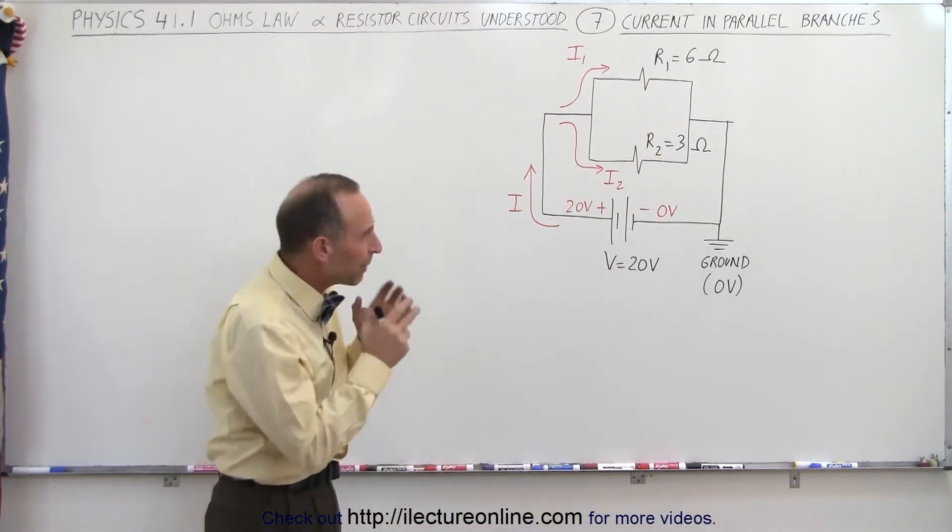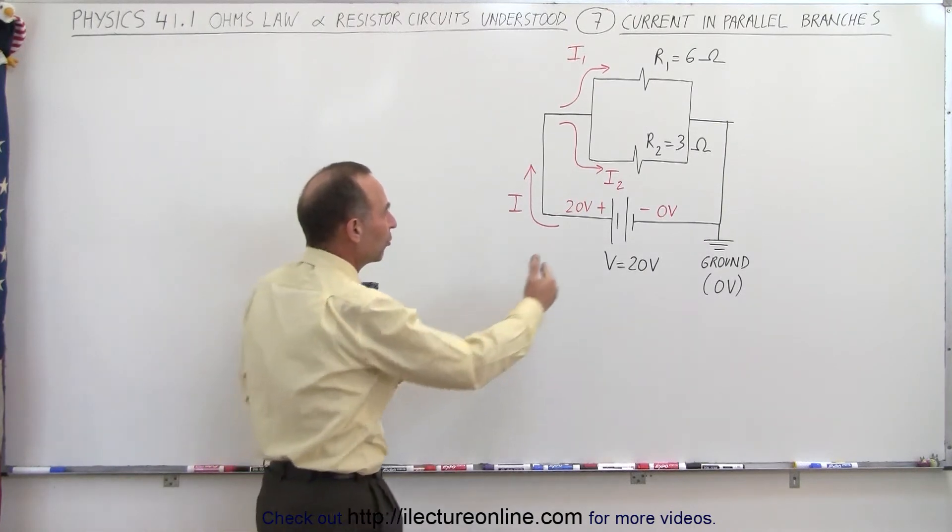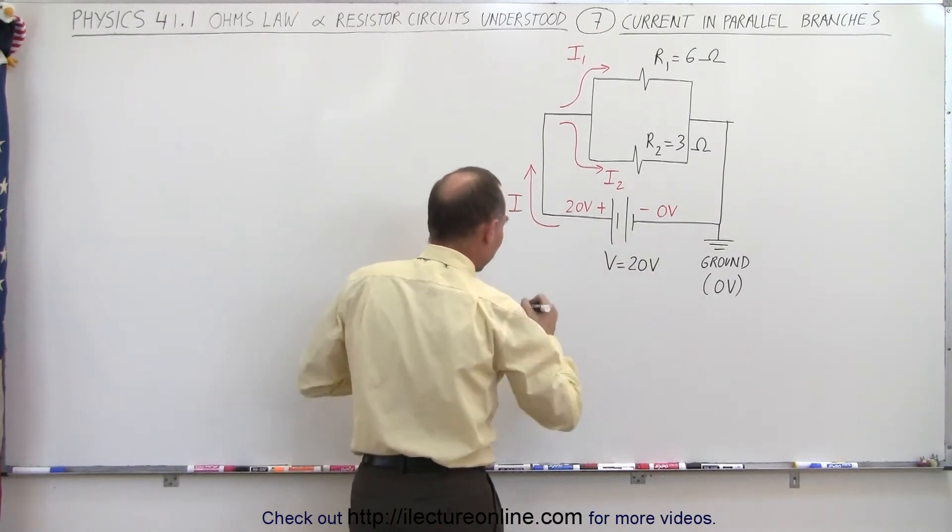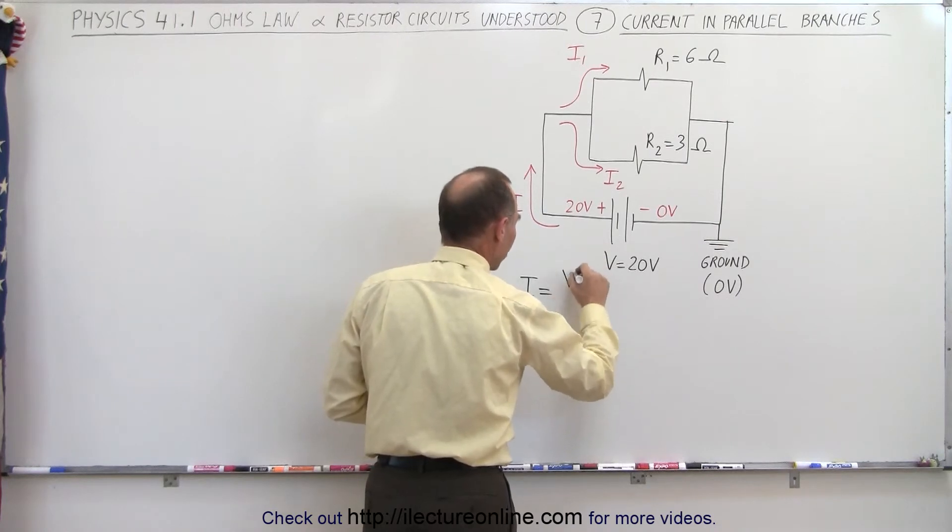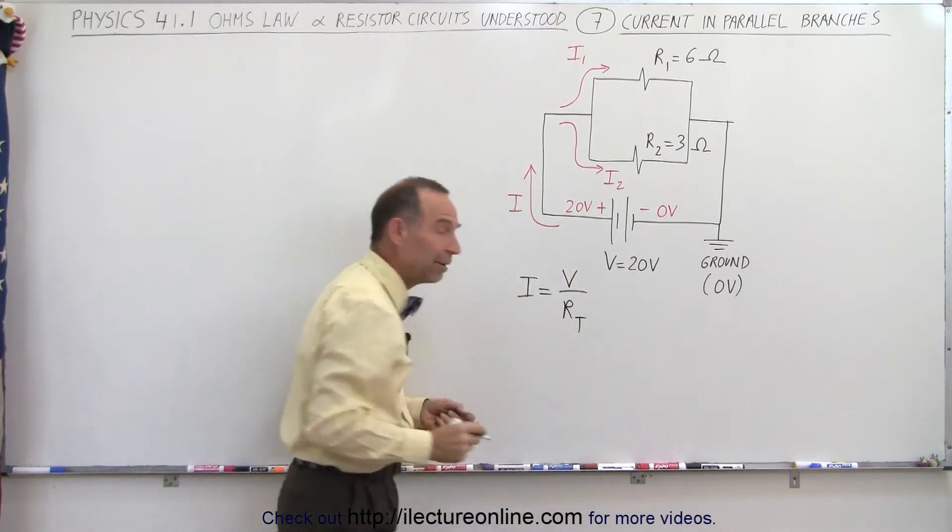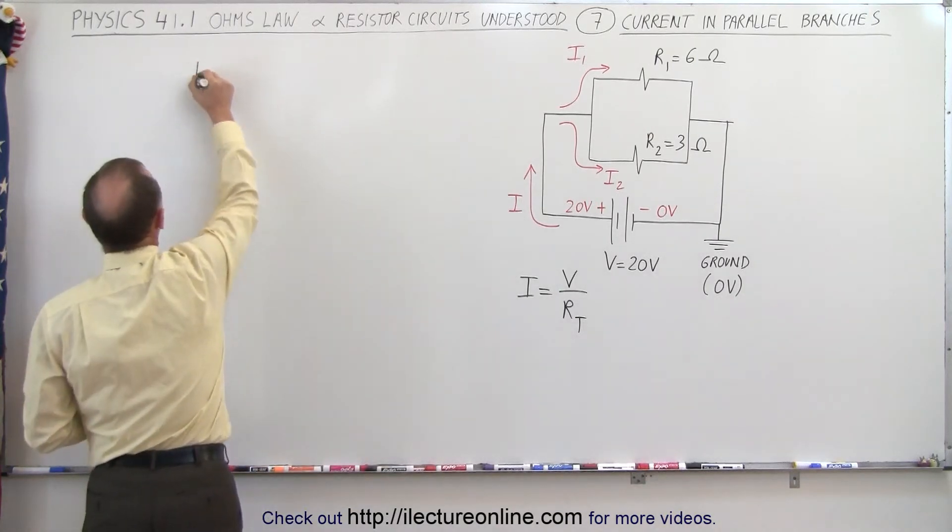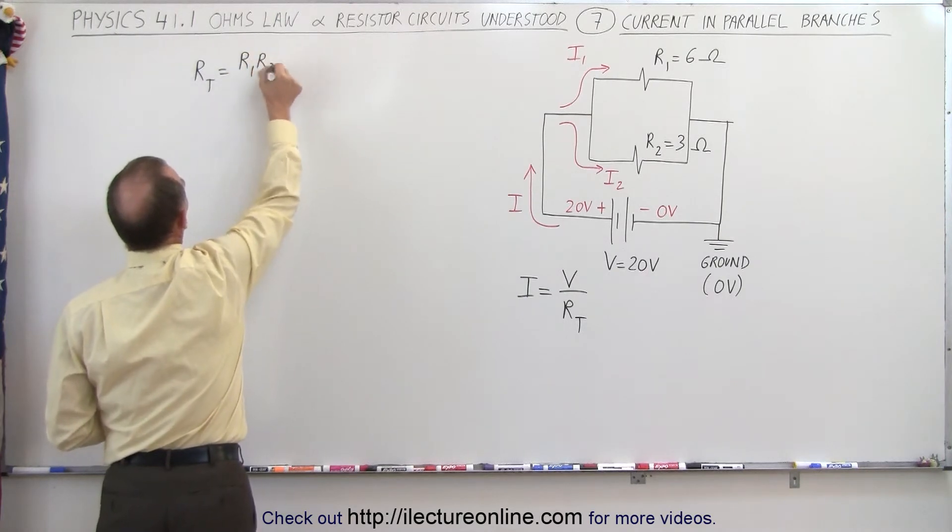Now let's think about that more in a conceptual way. We have a certain amount of current flowing through the circuit. Let's call it I, and we know that the total current I will be equal to the voltage supplied to the circuit divided by the total resistance. To find the total resistance, we can use the product over sum rule.